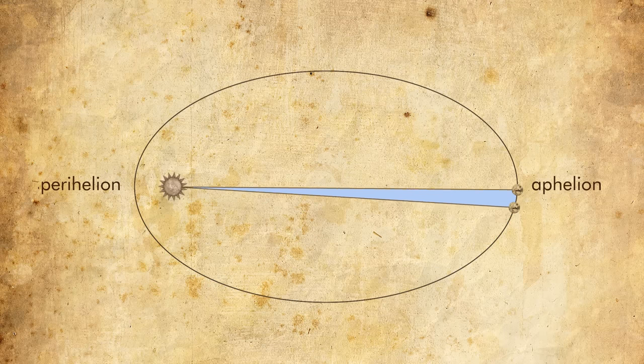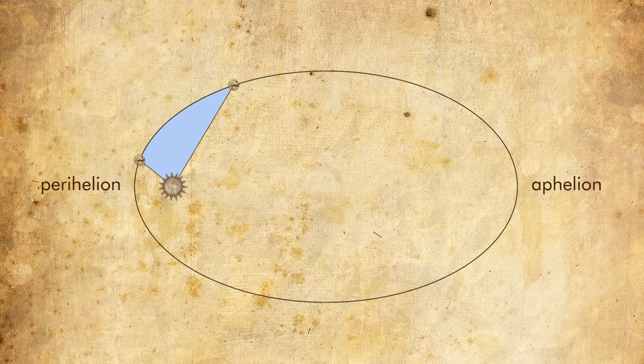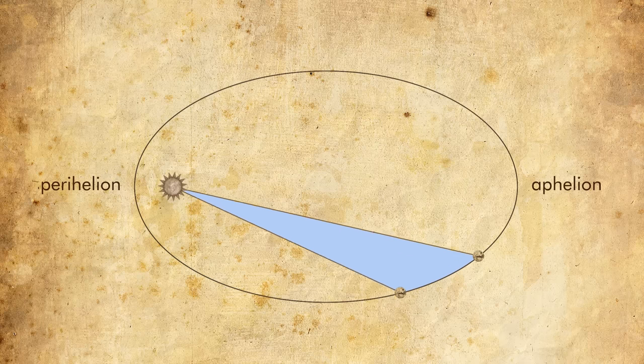In the second case, the line segment is much longer, but Mars also moves more slowly. Either way, the area swept out in a fixed amount of time is the same.